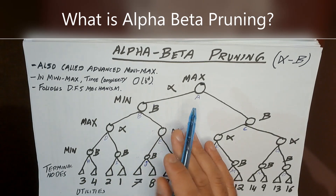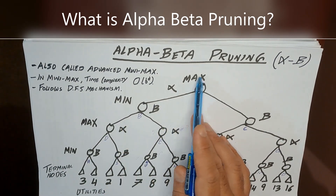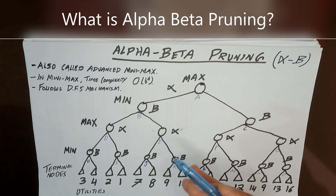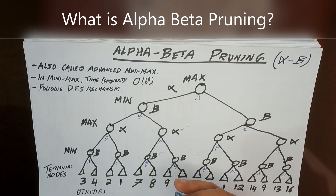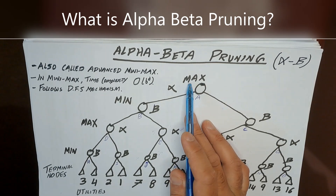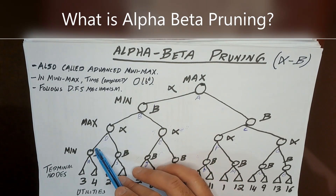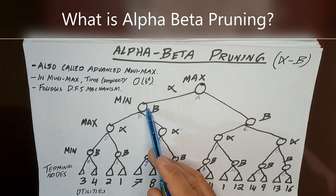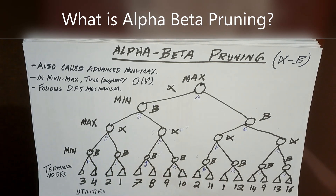Alpha-beta pruning works on the mechanism of depth-first search. Looking at this diagram, I will explain what the different terms mean. We have Max, then Min, then Max, then Min. In the Max-Min algorithm we consider two different players: one named Max and the other Min, both playing against each other — just like in tic-tac-toe. Max is the player who wants to maximize his reward, meaning getting the maximum reward at the end of the game.